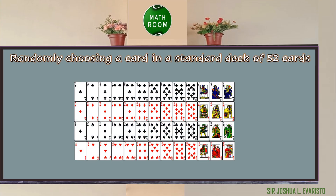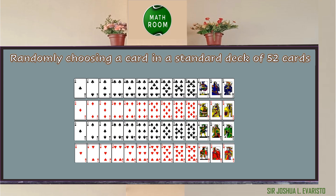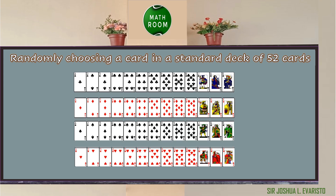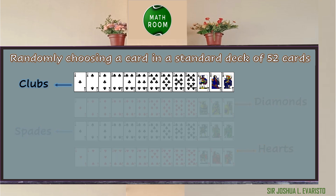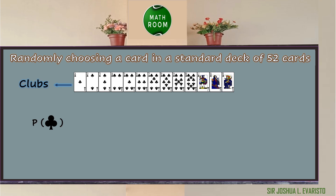Given for example, we have an experiment of randomly choosing a card in a standard deck of cards. Notice that each card is completely different from each other. In a deck of 52 cards, we can choose either a club, a diamond, a spade, or a heart. Using probability of simple event, the probability of getting a spade in a deck of cards is given by 13 over 52. So the numerator is 13 and the denominator is 52 since we have 52 possible outcomes in a deck of cards. Or simply 1/4, since 13 divided by 13 is 1 and 52 divided by 13 is equal to 4.